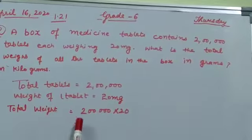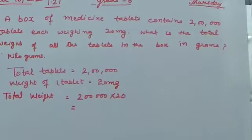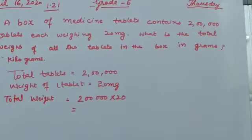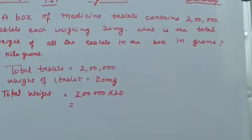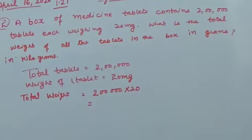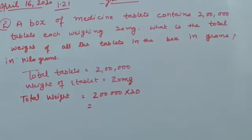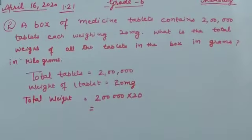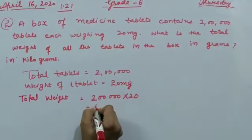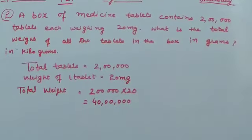So, total weight will be two lakh multiply by 20. Sometimes students get confused. They see the word total weight and think they need to add the tablets. But we don't add. One tablet weighs 20 mg. If we add two lakh plus 20, that would be wrong. We need to multiply them. Keep in mind, one tablet weighs 20 mg, so two lakh tablets will be multiply two lakh multiply 20. That is 40 lakh. Is it clear? 40 lakh mg.